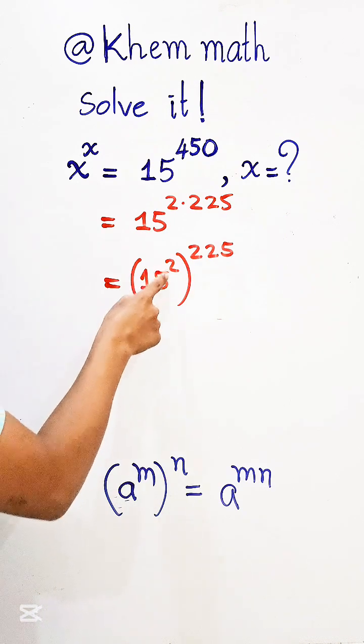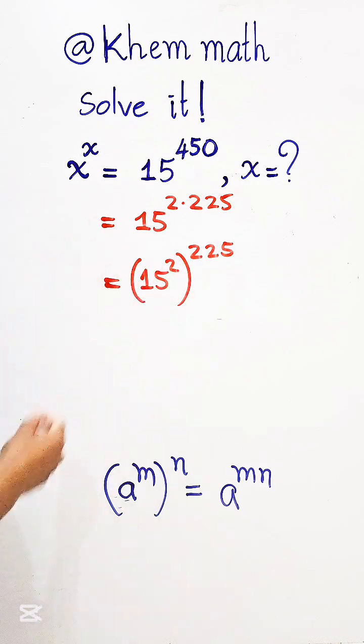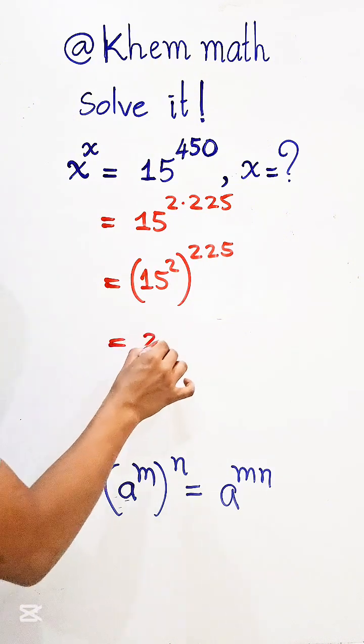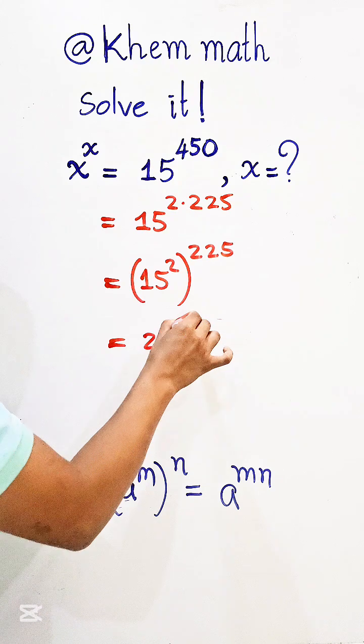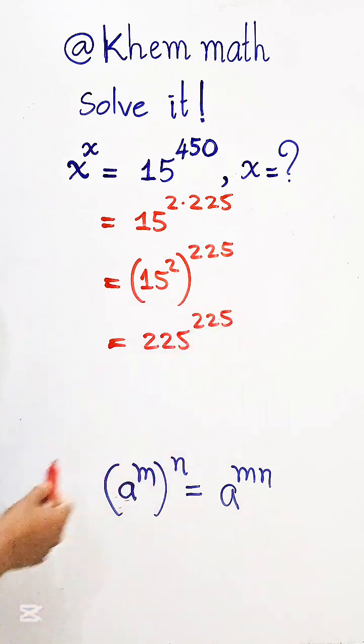And look, here is 15 square, 15 square equal 225. So it's equal 225 to the power 225.